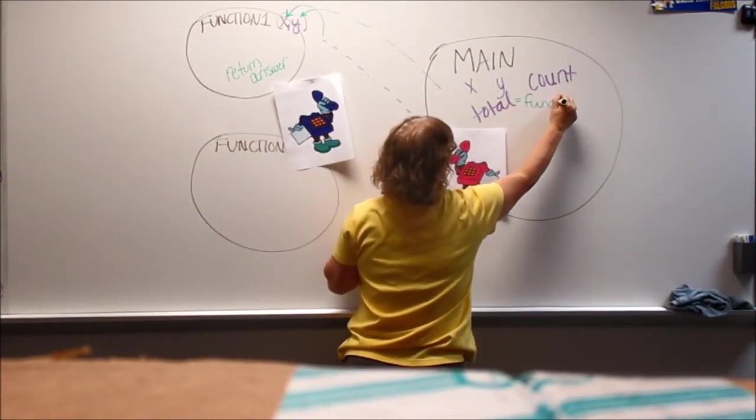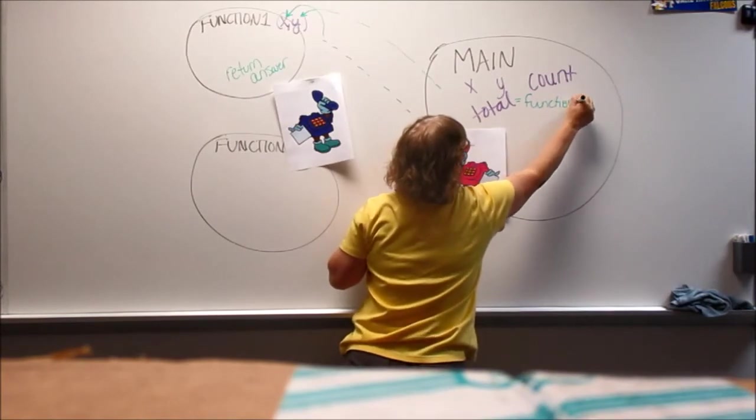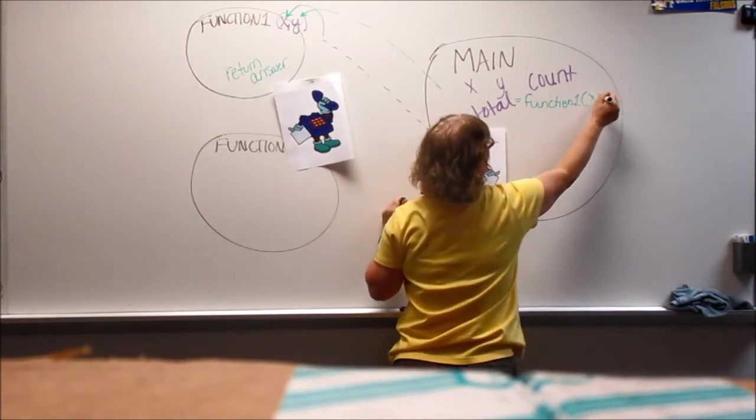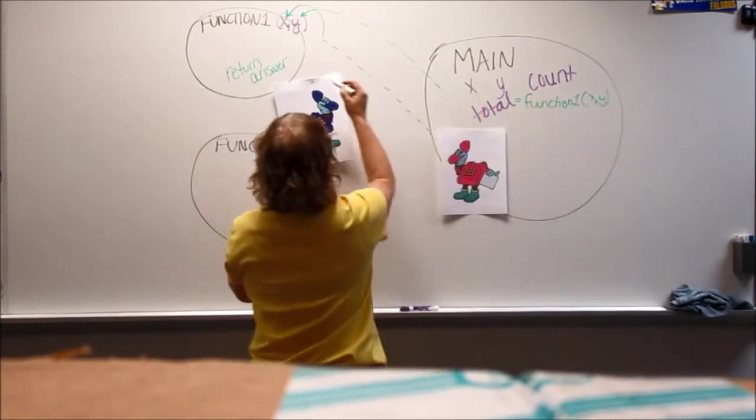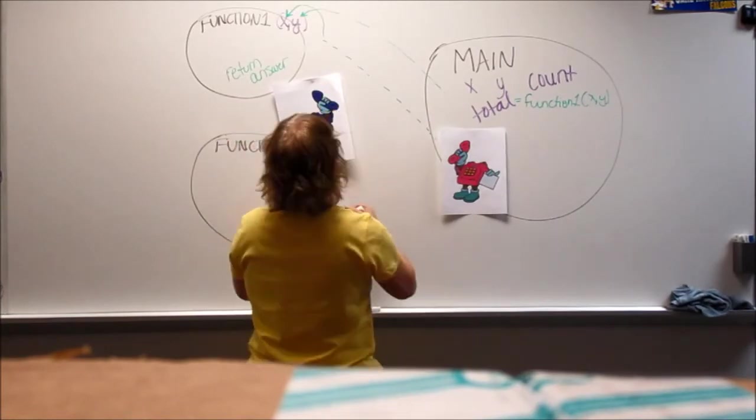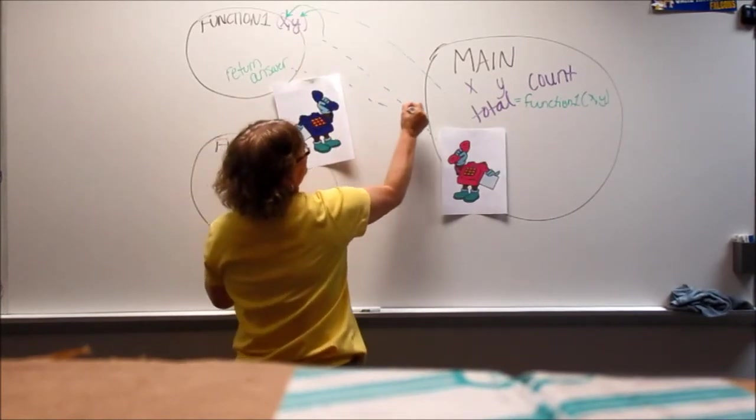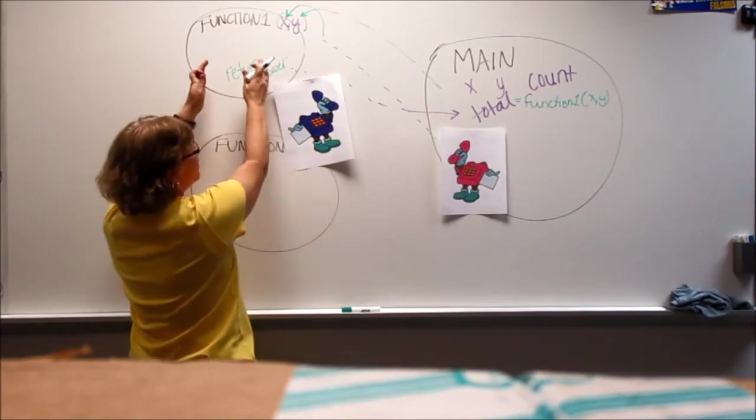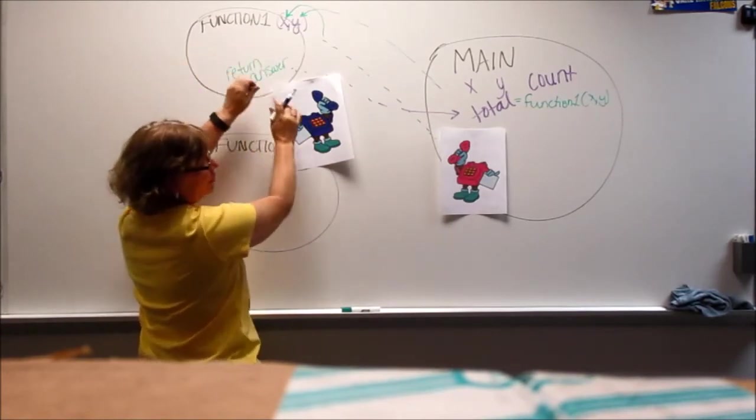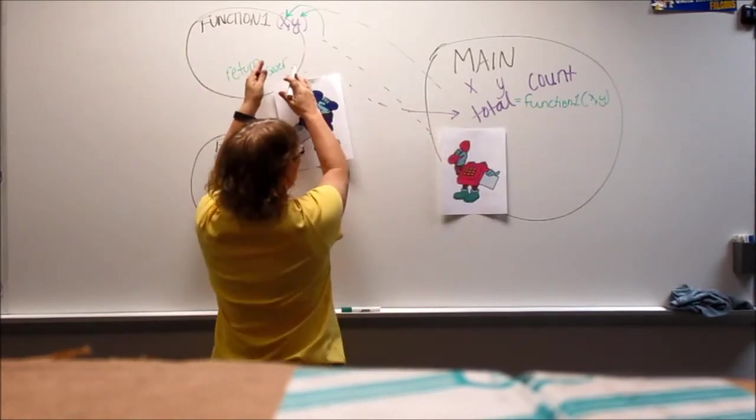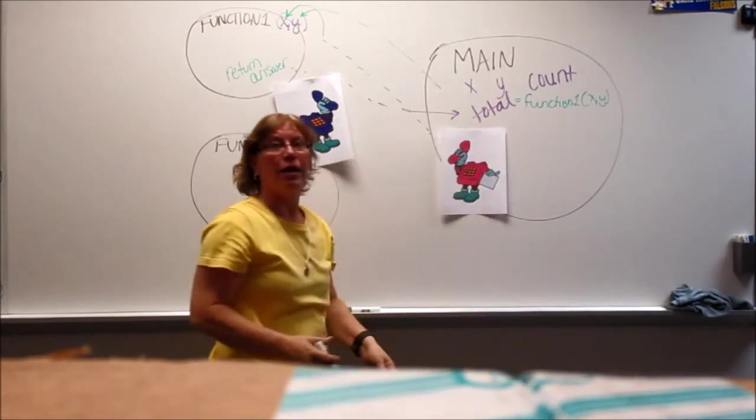So, we've got our function call. It's going to pass in x and y and then the answer, now answer stays here. Actually, when the function is done, it's gone, but they just make a copy of answer and it goes to total.